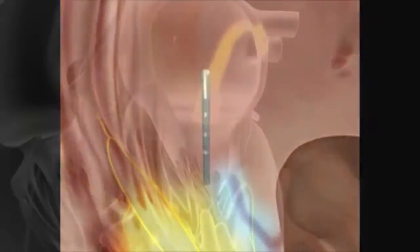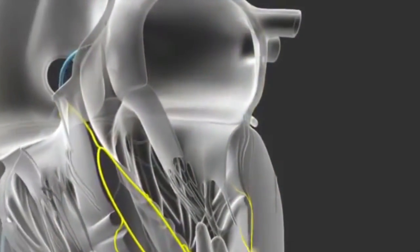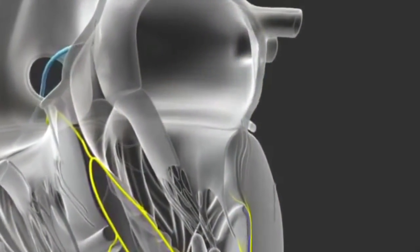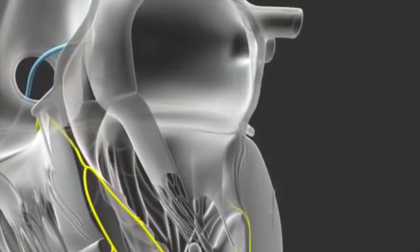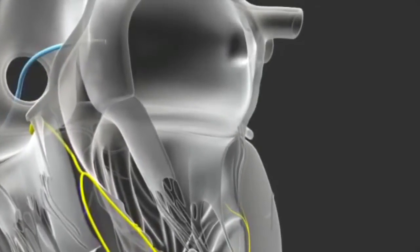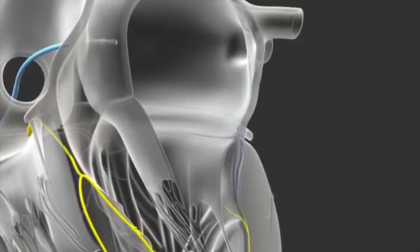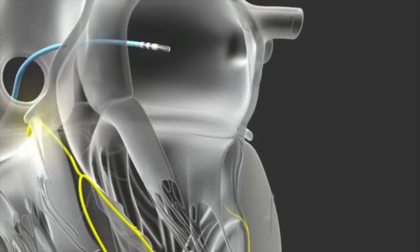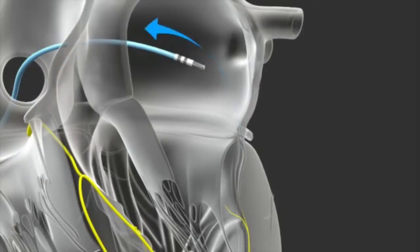In cases where the electrical abnormality is located on the left side of the heart, a small puncture is made in the thin wall that separates the left and right upper heart chambers, or atria.